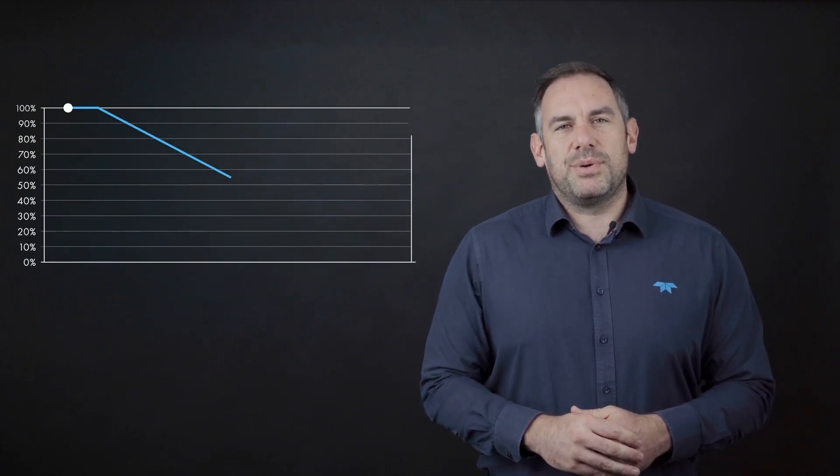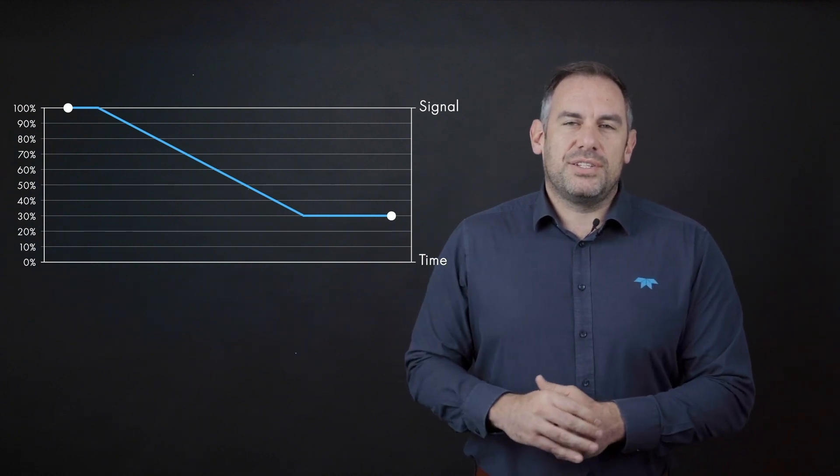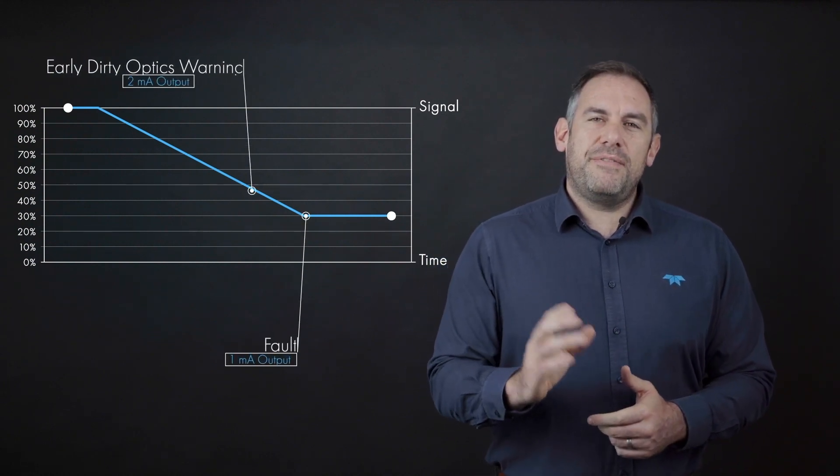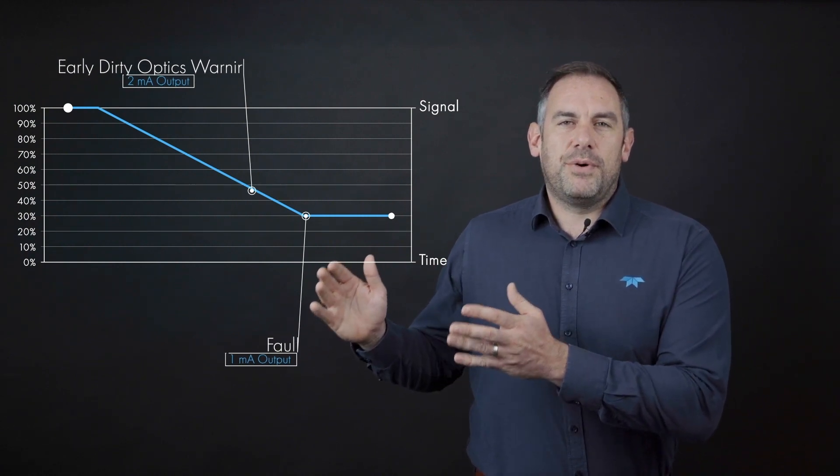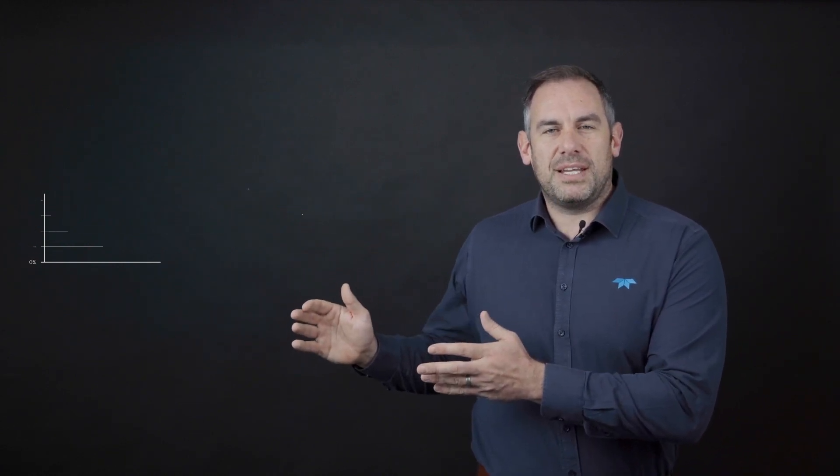In theory, if the contamination stays linear between the date of installation and the date of the early dirty optics warning, you have about 50% of that time to schedule in the cleaning of the lens before the device drops to the 70% absorption and goes into a genuine fault condition.